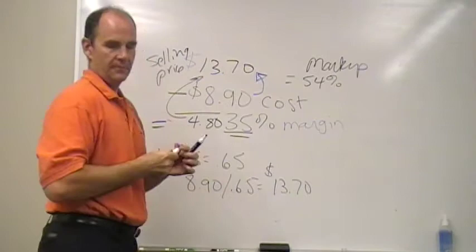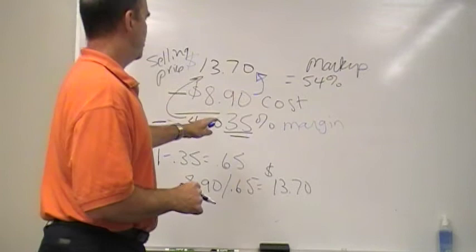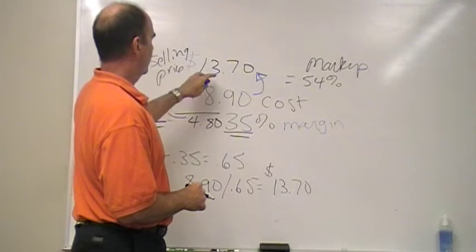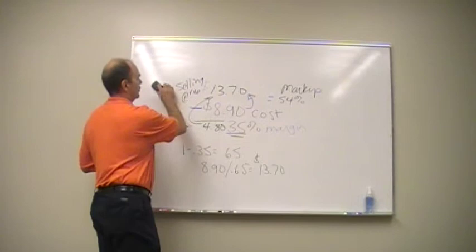Always work through the numbers. Because if you just took it times 1.35, you're going to end up with a much lower margin. Because your 35% margin here would have to be $4.80. So, $13.70 minus 8.90 equals $4.80. So, this is how you work through a problem. This is as clear as I can make it.